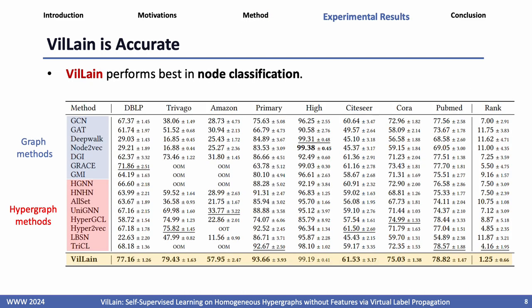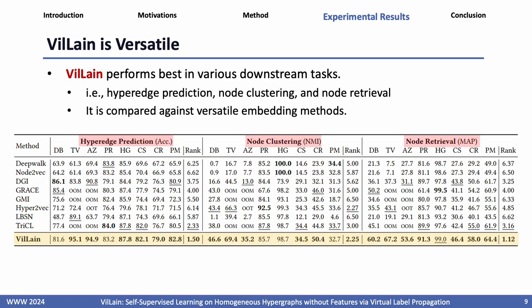Our extensive experimental results show that VILLEN is accurate in node classification compared to its competitors. Also, VILLEN is versatile, meaning that it performs well in various downstream tasks, including hyperedge prediction, node clustering, and node retrieval.